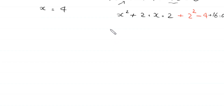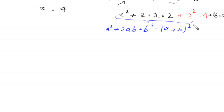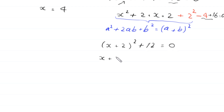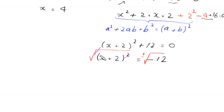Using the identity a² + 2ab + b² = (a + b)², the expression x² + 2(x)(2) + 2² becomes (x + 2)². Then negative 4 plus 16 gives plus 12, so we have (x + 2)² + 12 = 0. Moving 12 to the right-hand side gives (x + 2)² = −12. Taking the square root of both sides, x plus 2 equals plus or minus root negative 12.